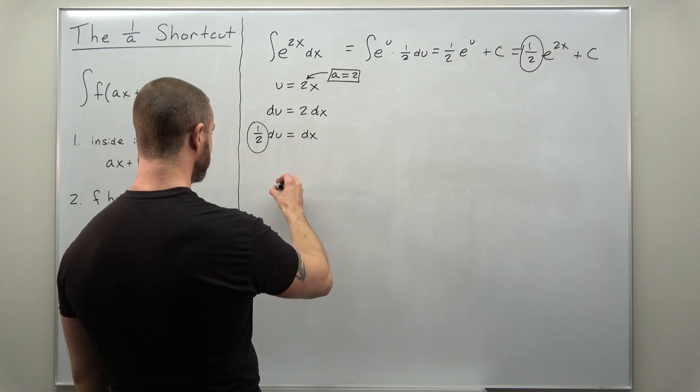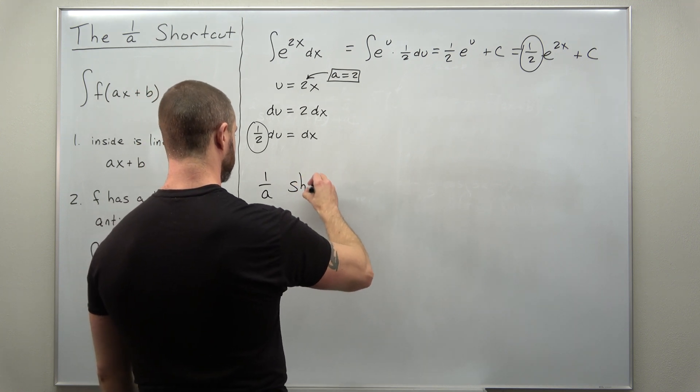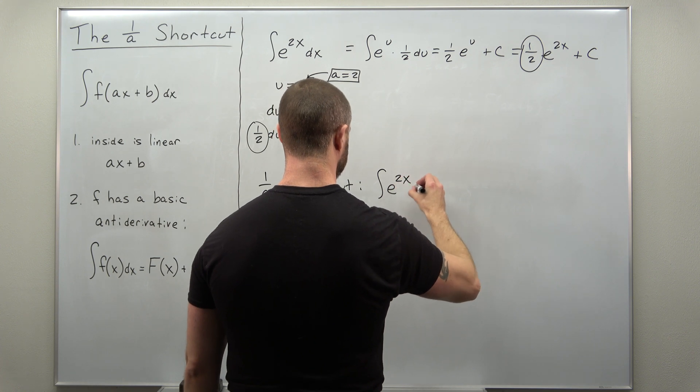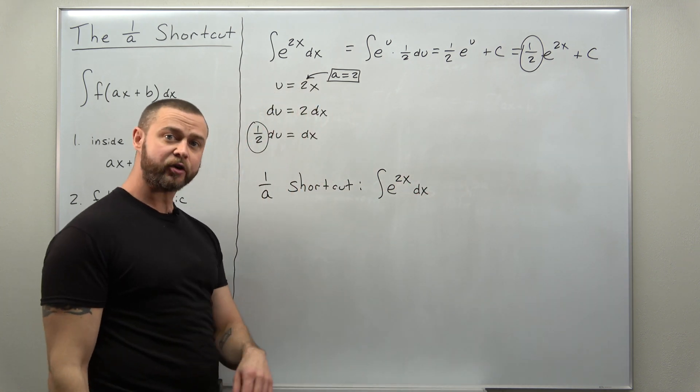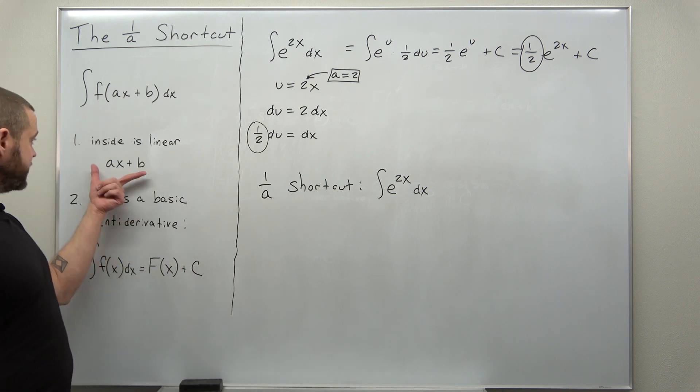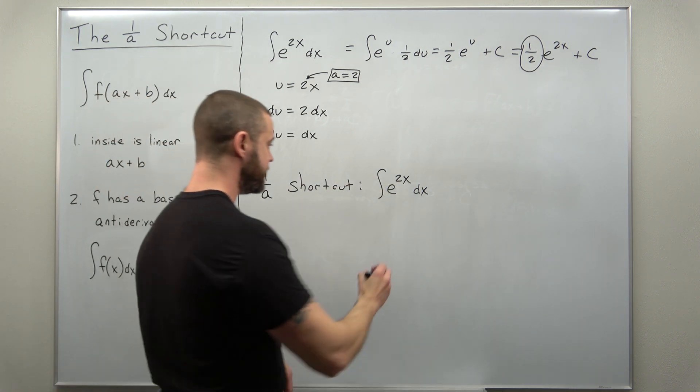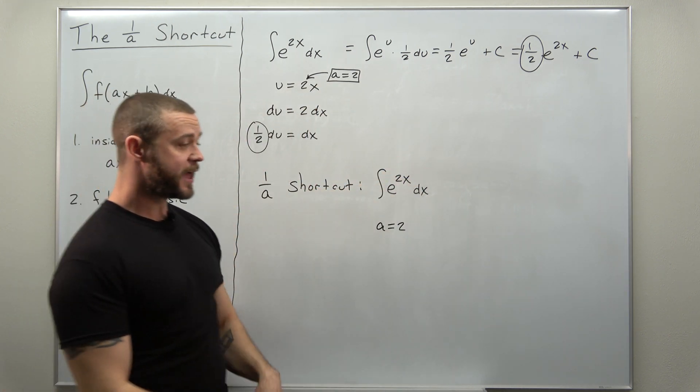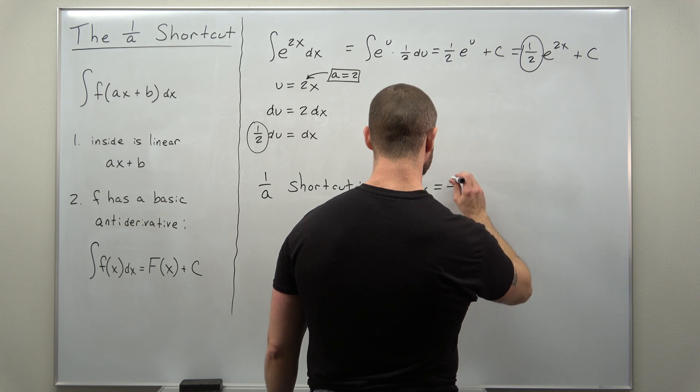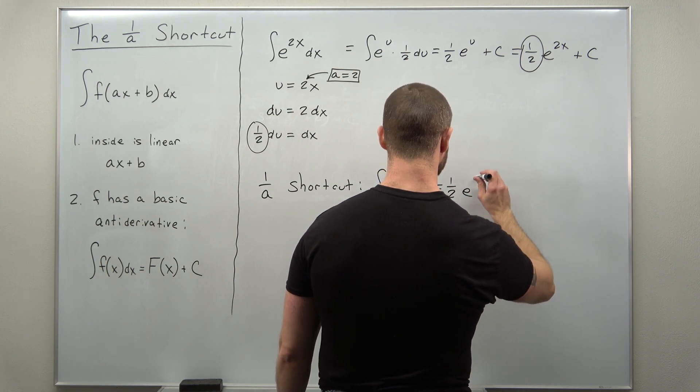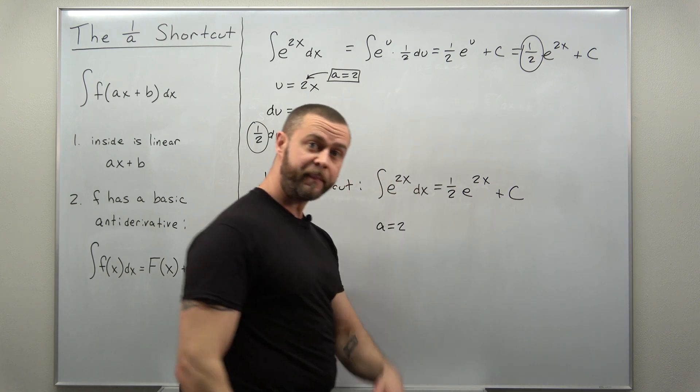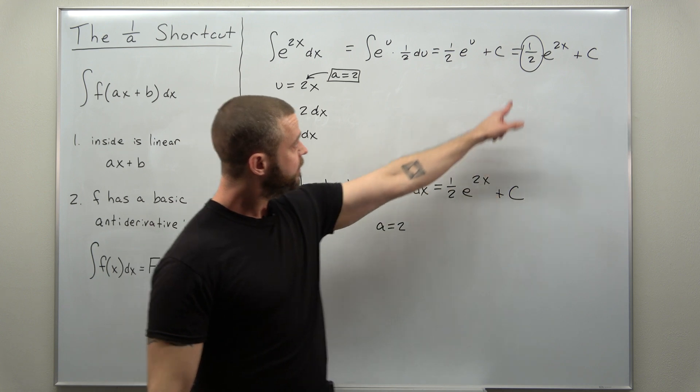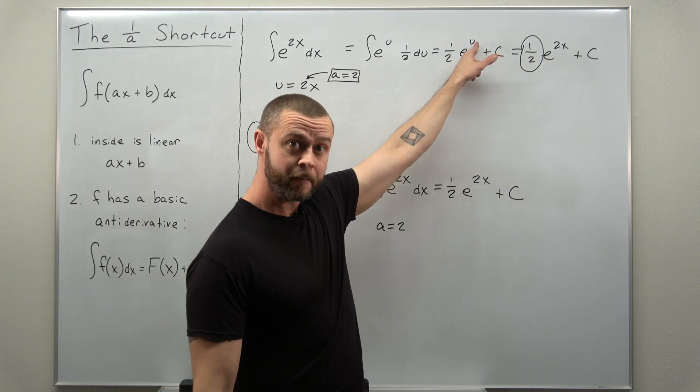So what the 1 over a shortcut looks like for this integral is I take a look at my integral, identify the linear expression and the value of a, and we get a 1 over a factor, 1 over 2, and then times your basic antiderivative. Notice the linear expression gets plugged back in because we back substitute u as 2x.